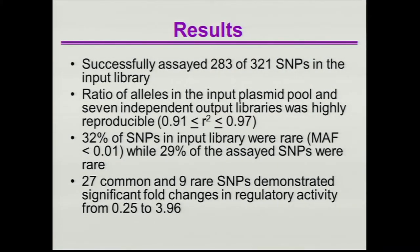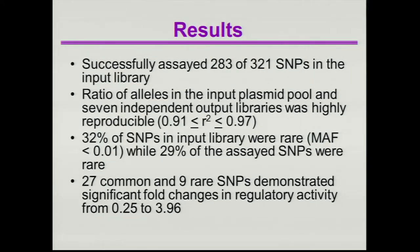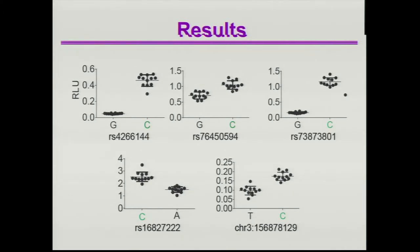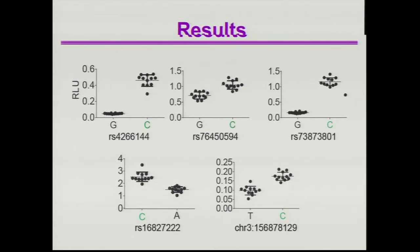27 common and 9 rare SNPs demonstrated significant fold changes in regulatory activity, some decreasing gene expression and others increasing gene expression. These fragments were then cloned 5-prime to a luciferase gene — previously they were 3-prime — and tested for their impact on expression. In each case, the allele with a higher level of expression in the initial assay also demonstrated higher luciferase expression in this more standard assay.